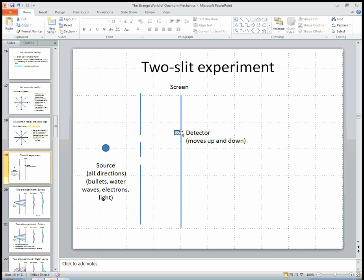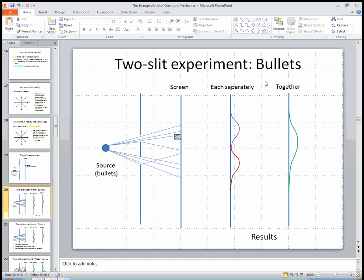And to make it more clear what's going on, we have a movable detector. And when we put the detector here, we detect how much stuff is ending up in the detector. We move it up and down and scan up and down to produce a picture of what happens.